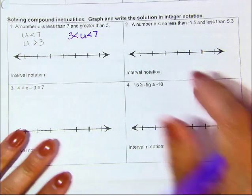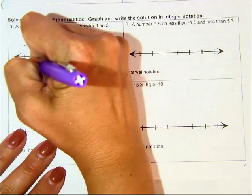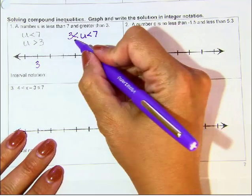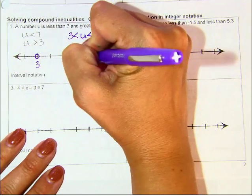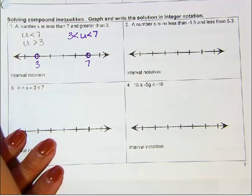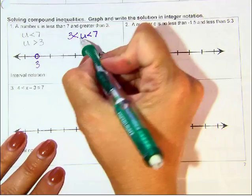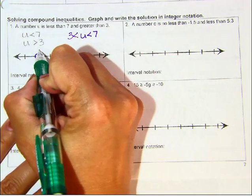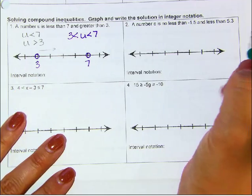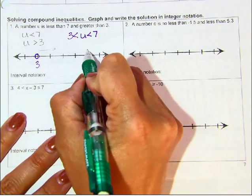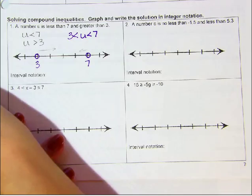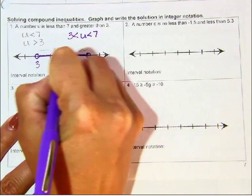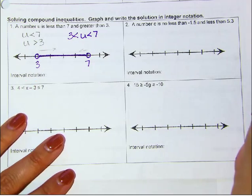So my endpoints here are 3 and 7. They do not equal, so they're going to have open circles. If I were to graph this, this tells me U is bigger than 3, so it goes this way, and U is less than 7 goes that way. These two graphs will overlap here in the middle, in between these. So that is the solution for that inequality.